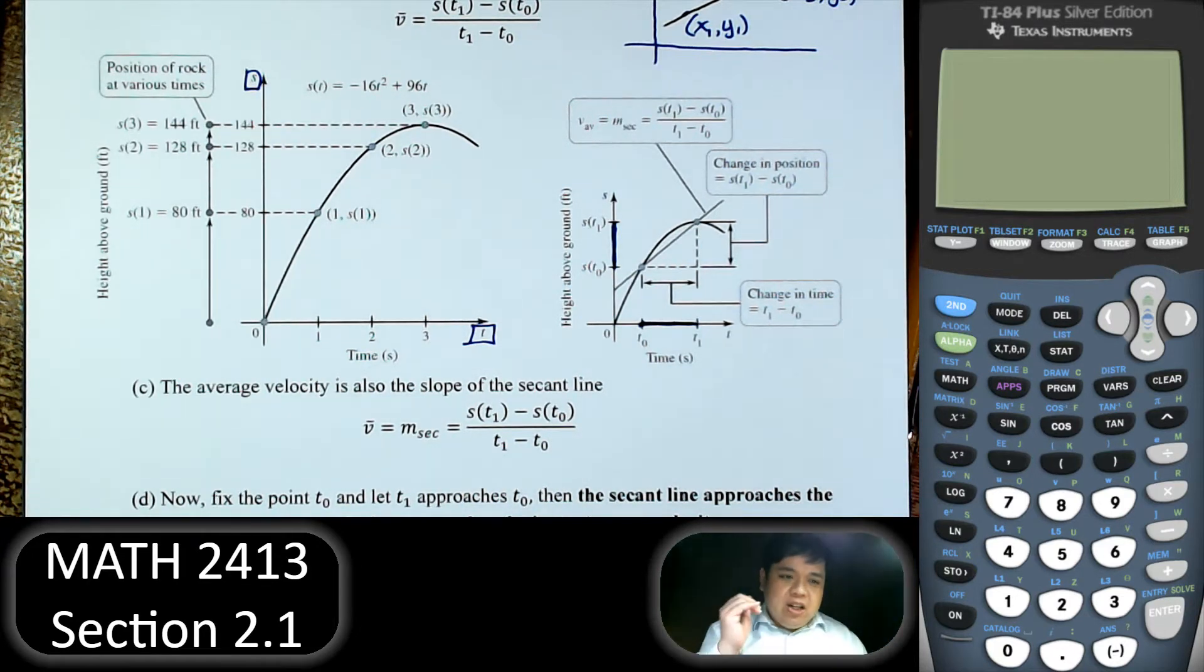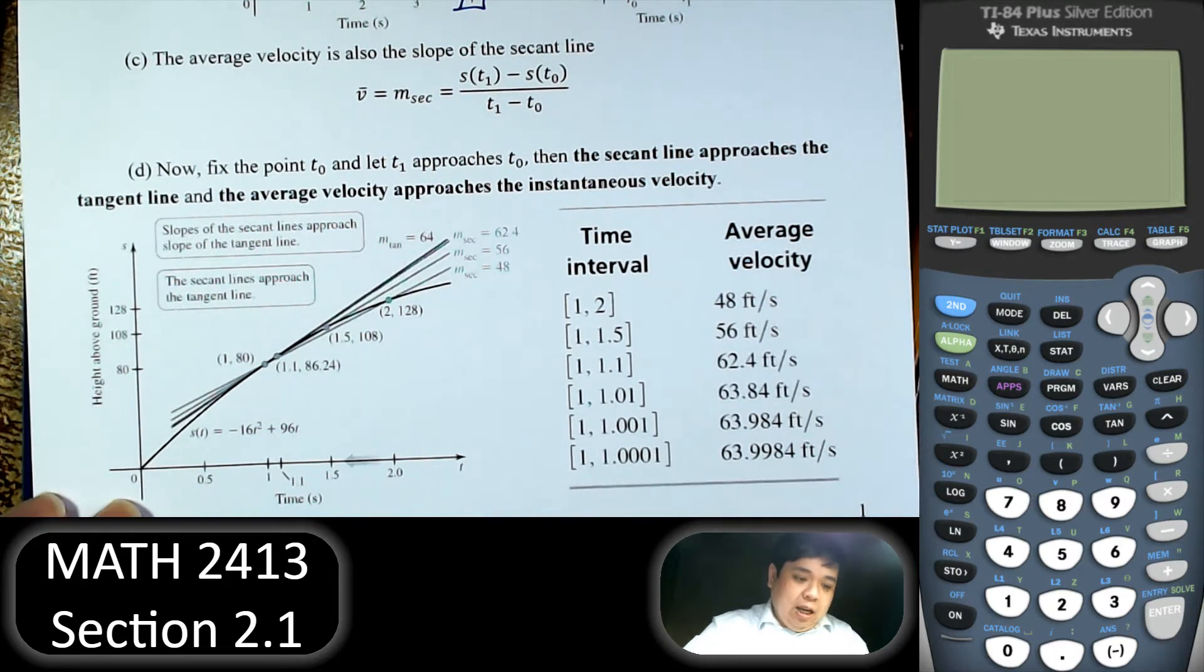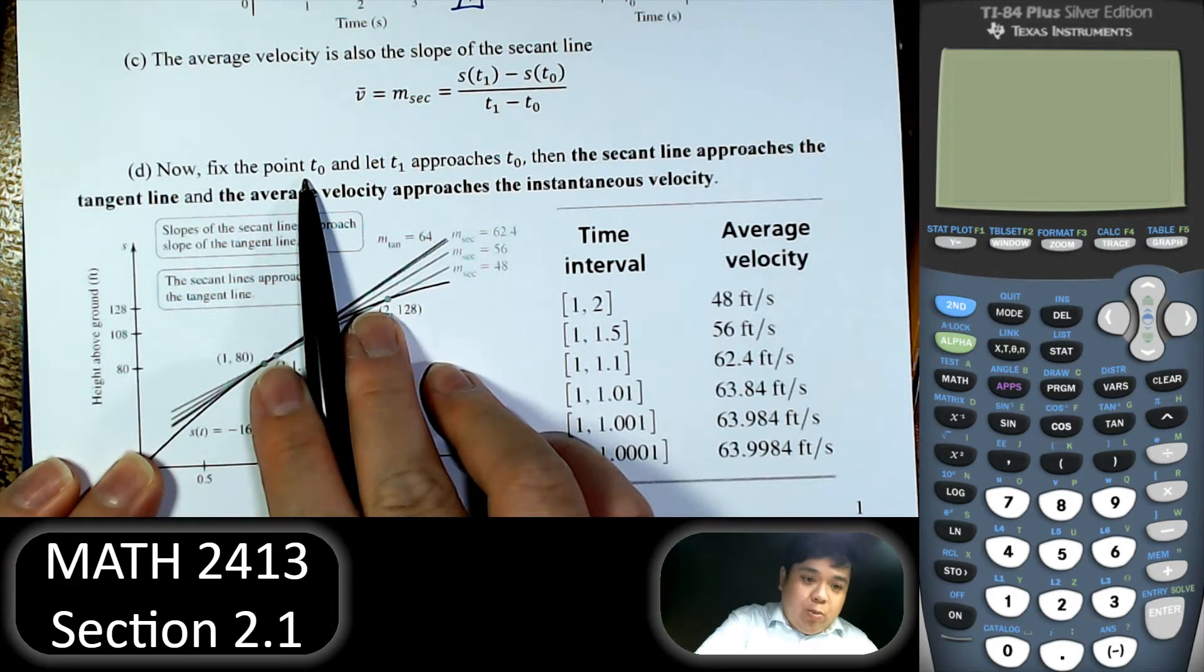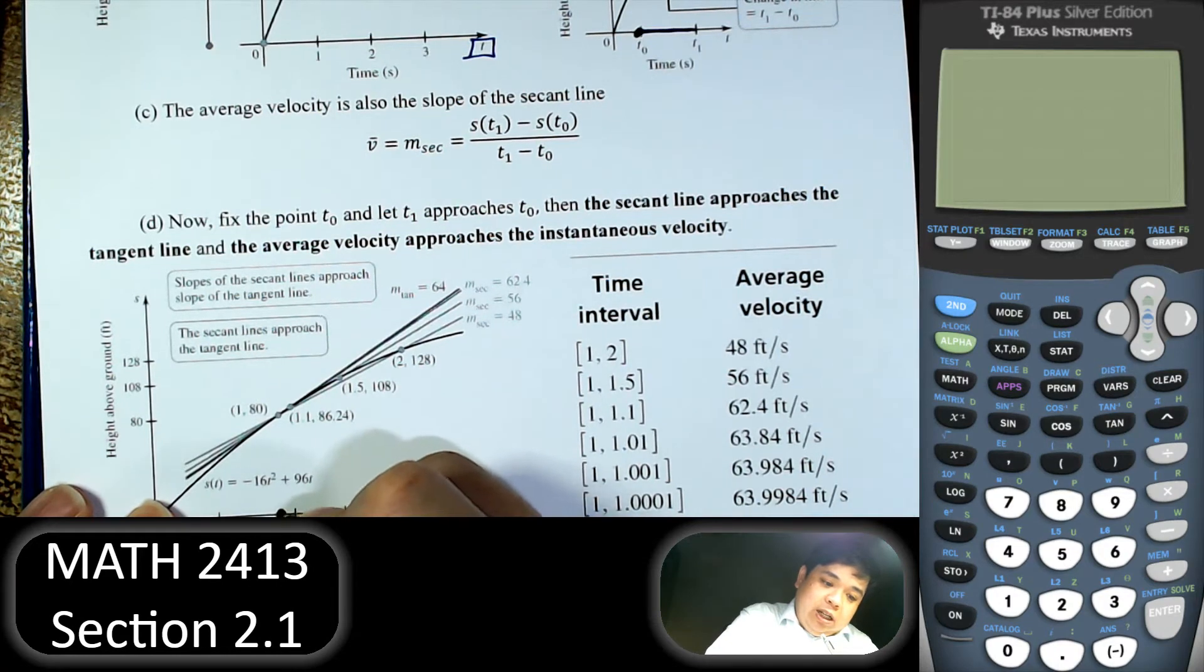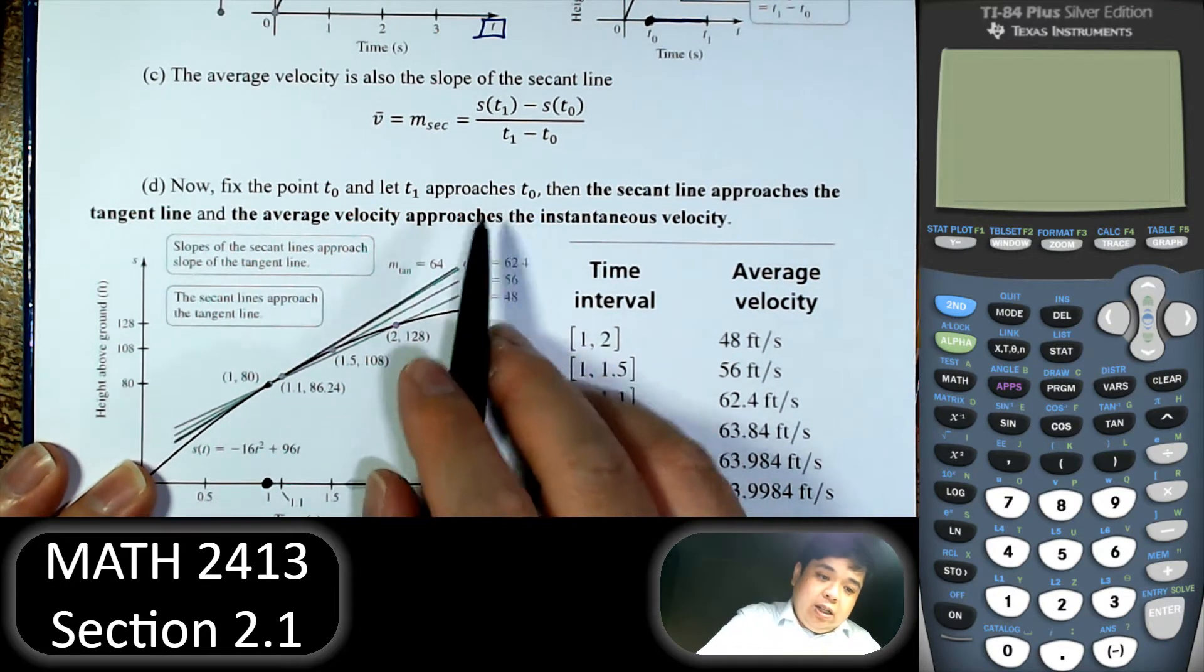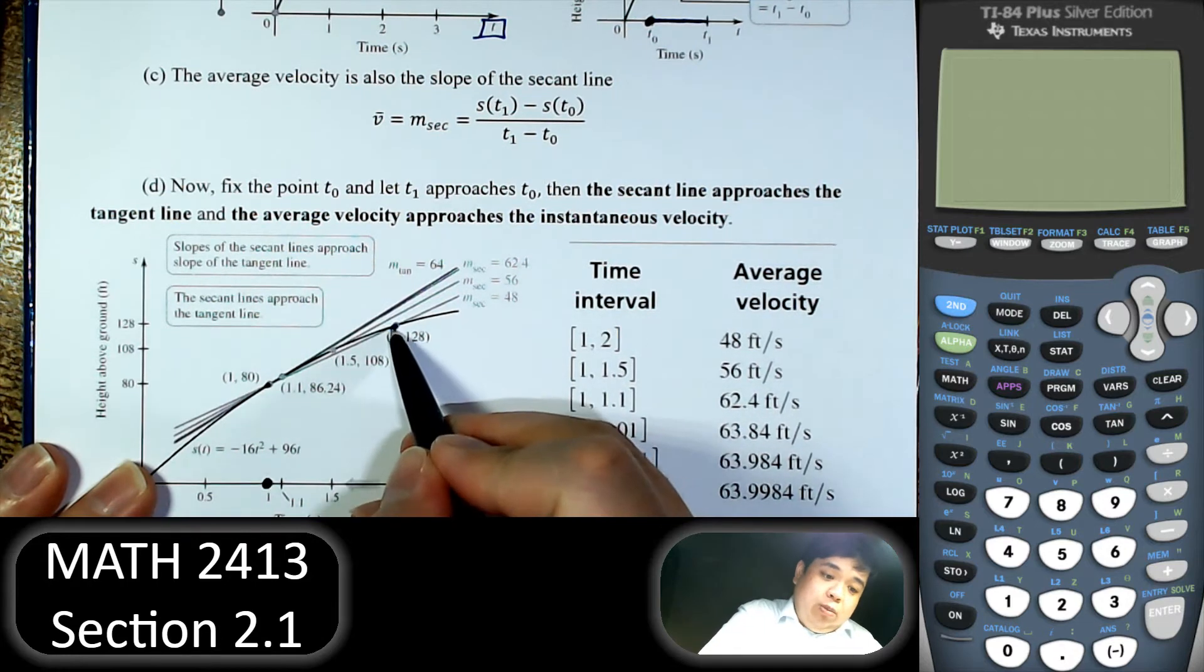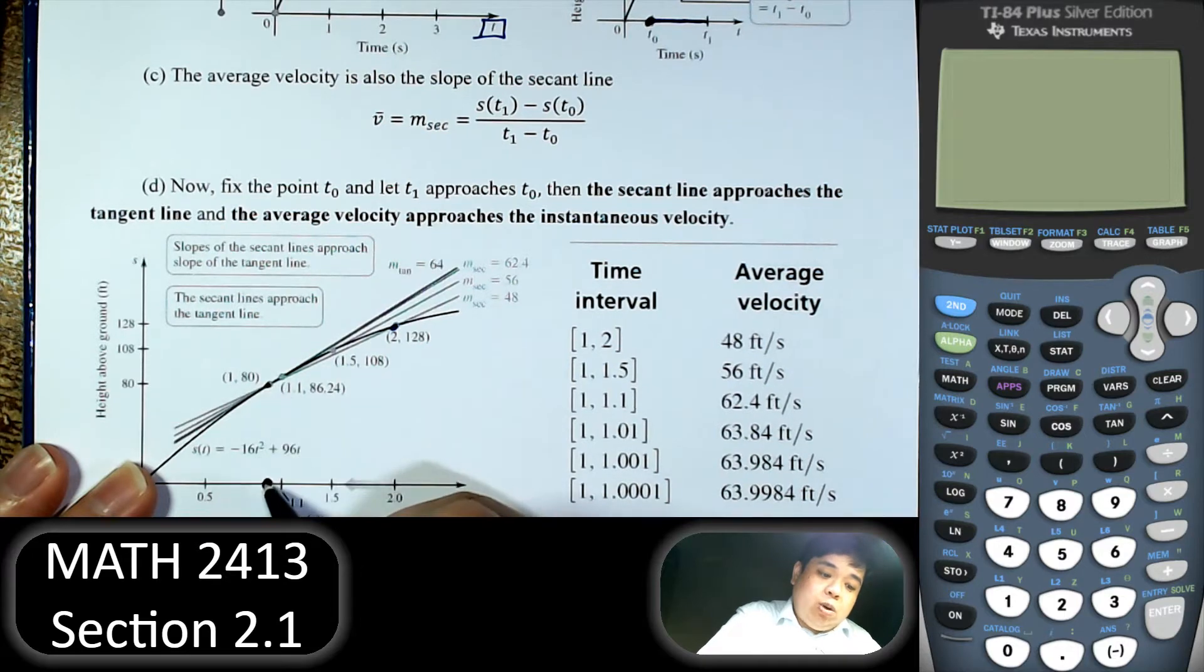The focus here is not the average velocity or the slope. The focus here is the idea of limit. So what we do is let's say we fix one of those points. Let's say we fix this t0. Let that be 1. So this point is fixed. And we let the other point t1 originally here, and we move closer and closer to the fixed point.